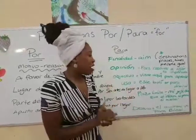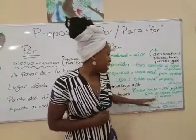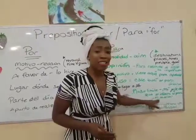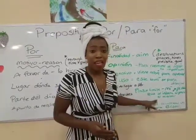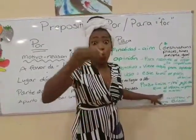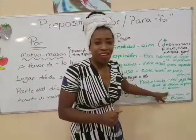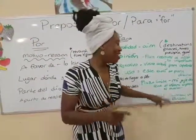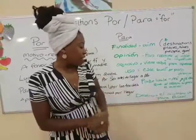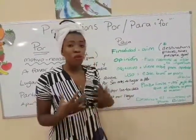The next use of 'para' is 'plazo límite' — a time limit or deadline. For example, 'mi jefe dice que el informe es para el martes' — my boss says the report is for Tuesday. So we're talking about a deadline.